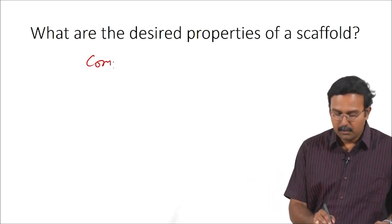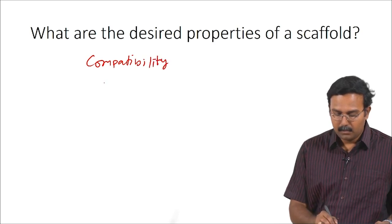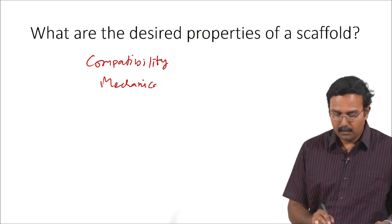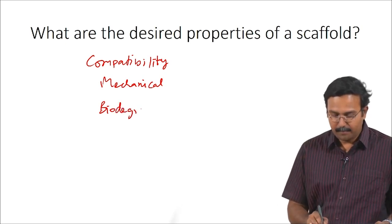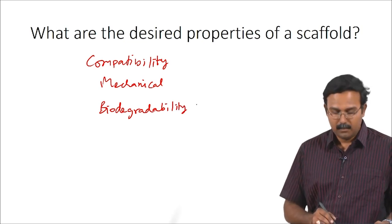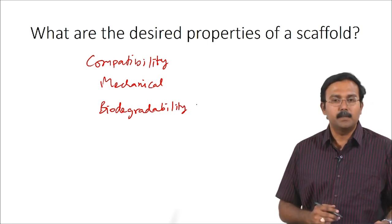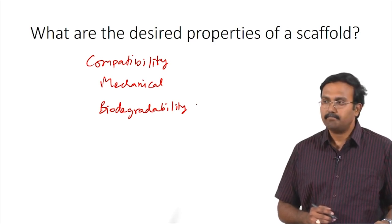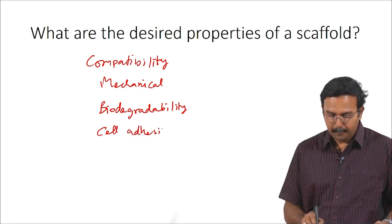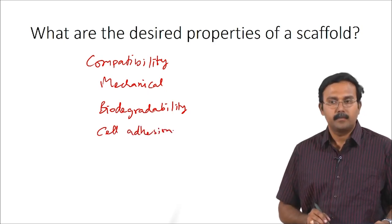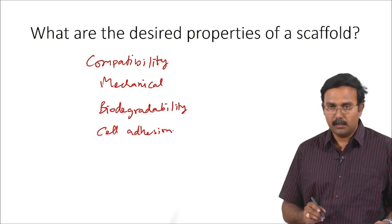What are the desired properties of a scaffold? Students suggest: mechanical properties, compatibility, biodegradability, non-immunogenic behavior, and high cell adhesion. Porosity is also important — for diffusion of nutrients and molecules that should reach the tissue, for oxygen transfer, for removal of toxic byproducts, and for cell infiltration. Porosity also gives you a structure closer to what a real ECM would be — a porous matrix in which cells can adhere and grow.